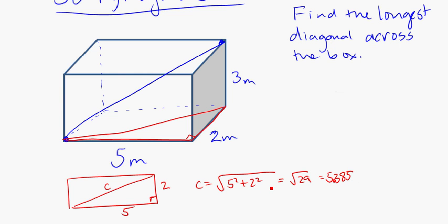So that's this diagonal here, and that's the length across the bottom of the box. We now know that that has a distance of 5.385 meters.